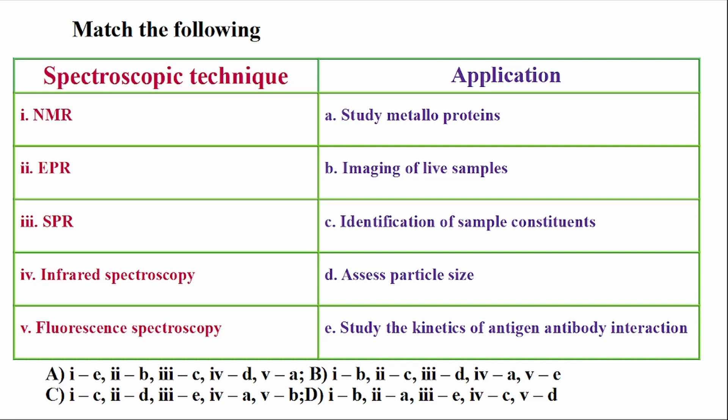The spectroscopic techniques are: 1-NMR, 2-EPR, 3-SPR, 4-Infrared Spectroscopy, 5-Fluorescent Spectroscopy. The applications are: A - study metalloproteins, B - imaging of live samples, C - identification of sample constituents, D - assess particle size, E - study the kinetics of antigen-antibody interaction.